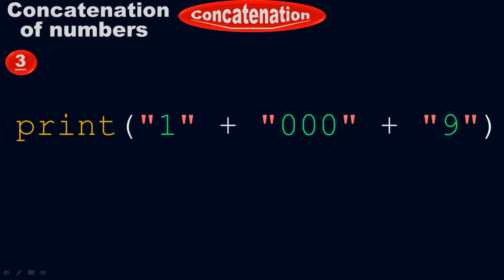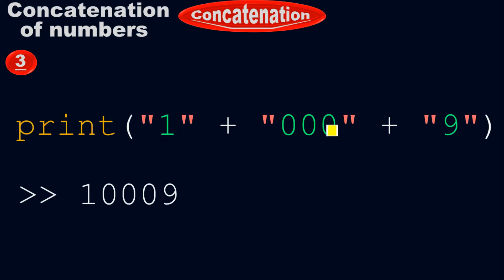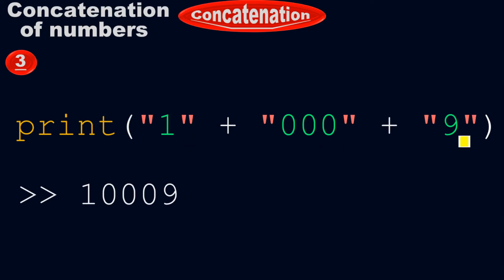Example number 3: print of 1 inside the quotes plus 0.00 inside the quotes plus 9 inside the quotes — it equals to 1.009. We do the same things. I have 3 numbers here: 1 inside the quotes, 0.00 inside the quotes, and 9 inside the quotes. After concatenation, I got the output 1.009. By applying concatenation, at the end the output I got is 1.009, which is the output of this expression.